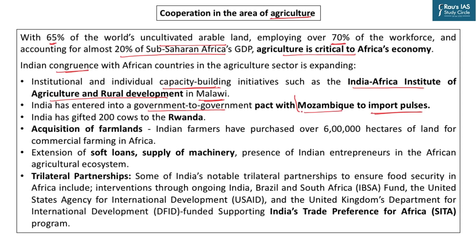India is also helping Mozambique develop climate-smart agriculture given the changing scenario of climate change. In 2018, on his visit to Rwanda, Prime Minister Modi gifted 200 cows to the Rwandan government for a government-run scheme. The government-to-government pact between India and Mozambique can also be seen as contract farming or cooperative farming. This idea is not limited to government-to-government — many private bodies and farmers are involved in acquisition of farmland in African nations, with Indian farmers purchasing around 6 lakh hectares for commercial farming.